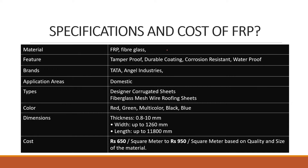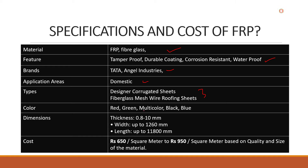Specifications and cost of FRP: the material features include tamper-proof, durable coating, corrosion resistant, and waterproof. Brands include Tata, Angel Industries, and many more manufacturers. Application areas include domestic and industrial uses. Types available include designer corrugated sheets and fiber mesh wire roofing sheets.